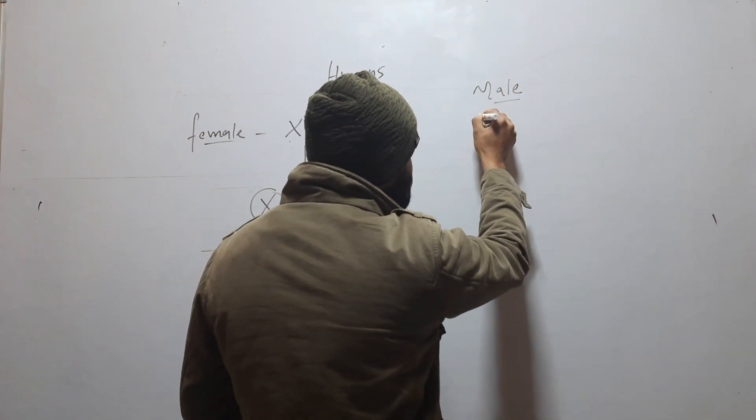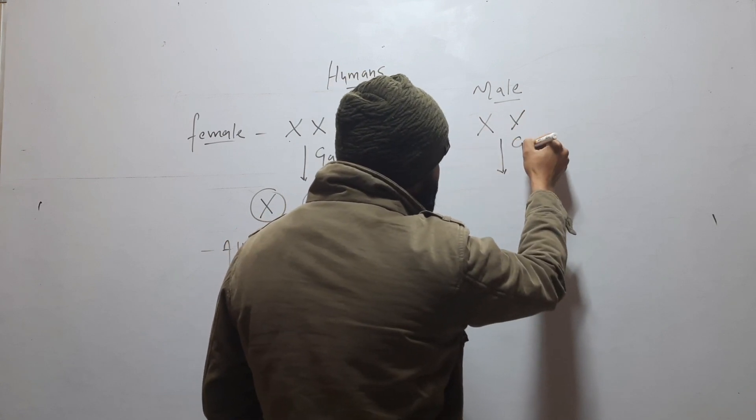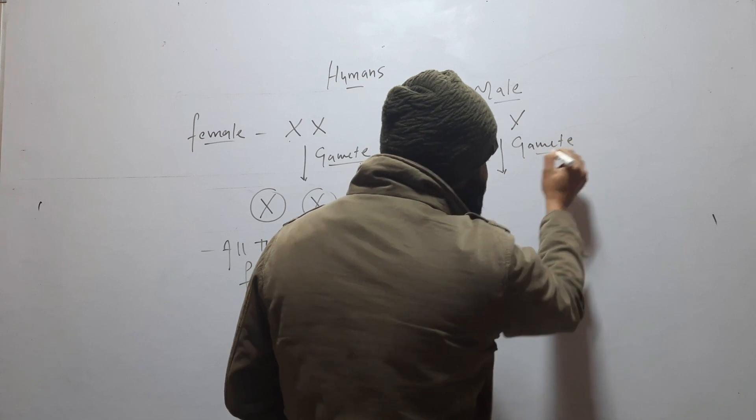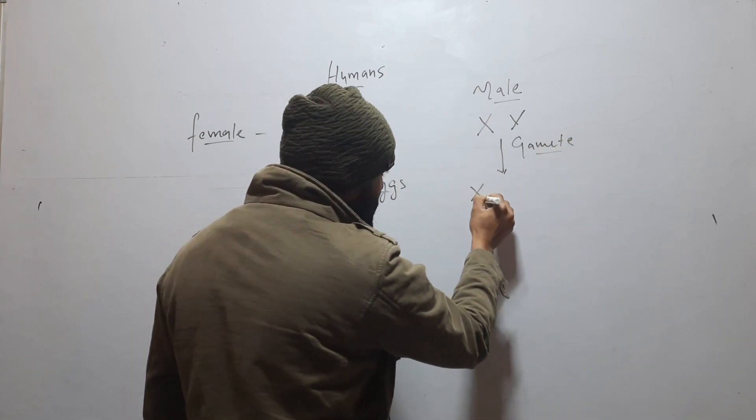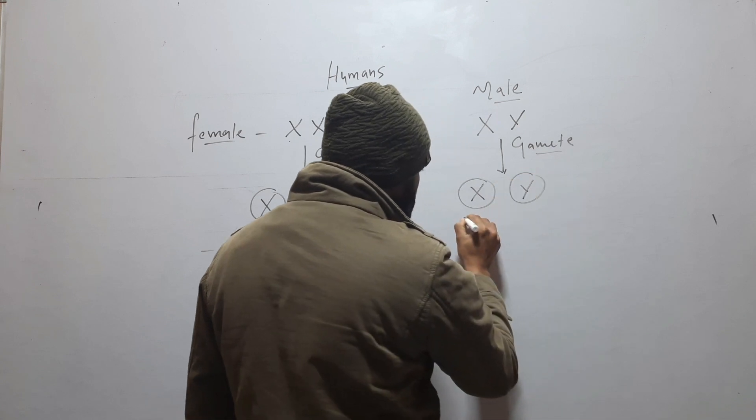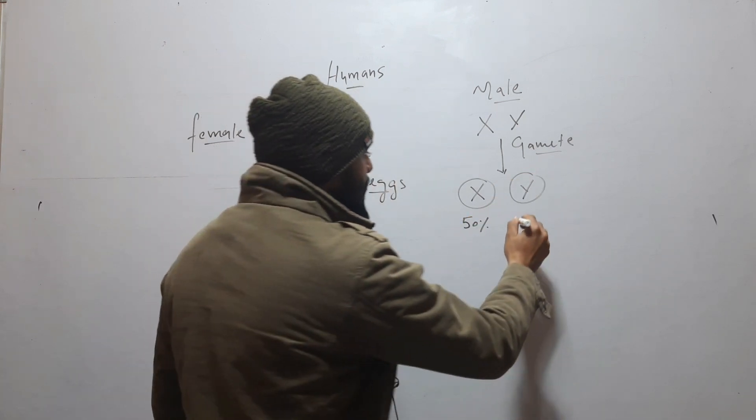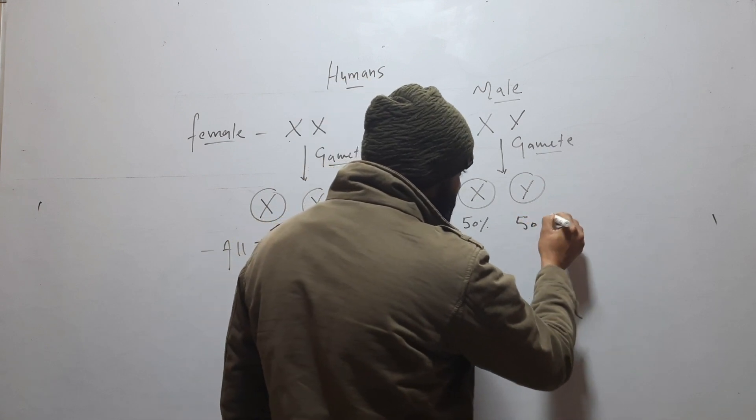That is X and Y. During gamete formation, they will separate. One gamete will have X and another will have Y. So 50% of gametes will have X chromosome and 50% will have Y chromosome.